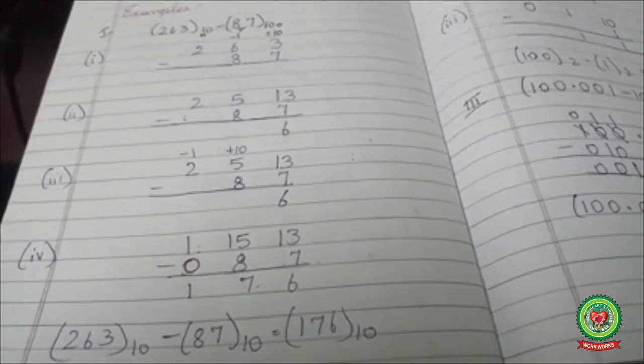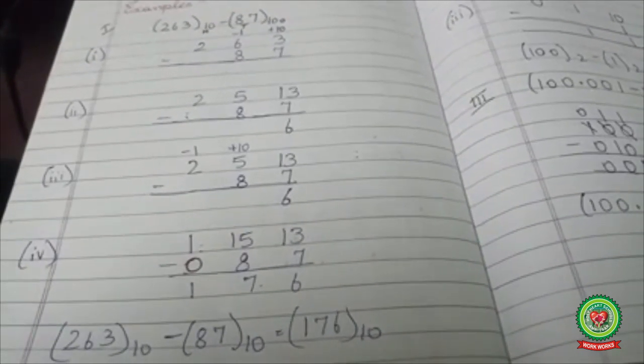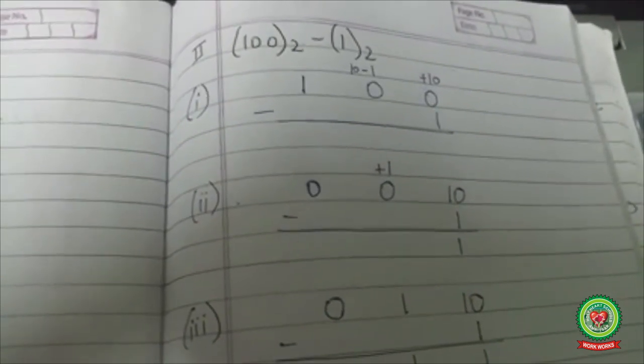Now let's do binary subtraction with the method of borrow. In binary numbers we are having only two digits, 0 and 1. 1 is always greater than 0.